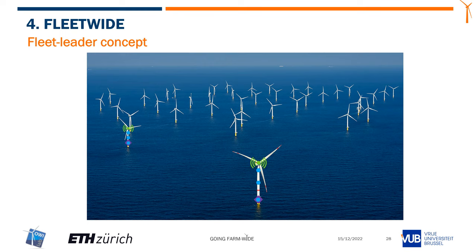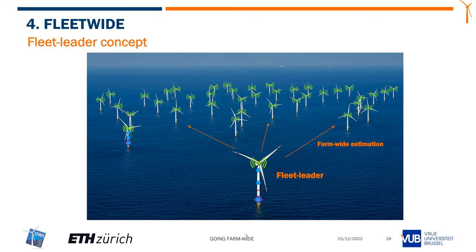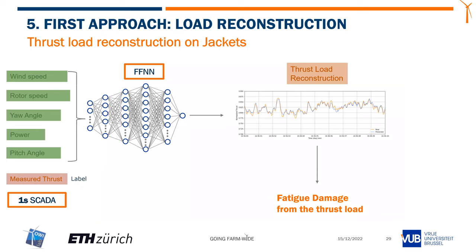This is where our fleet leader concept comes from. We can't install strain gauges across the entire farm — it's far too costly. We can only have two or three turbines with strain gauges providing ground truth for our models. We train our models on one of these turbines — the so-called fleet leader — then cross-validate on another turbine, and finally make farm-wide predictions. This can get more complex, thinking of it as a population-based approach, but in a nutshell that's the concept.